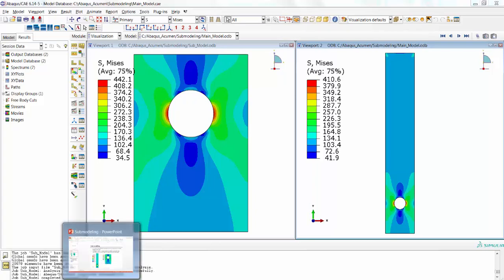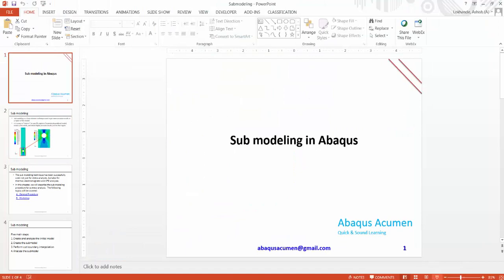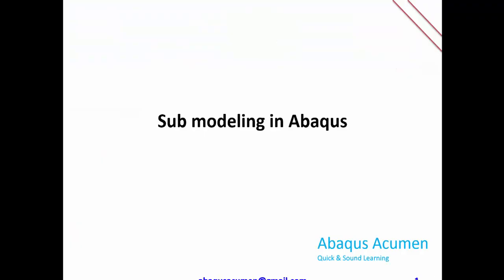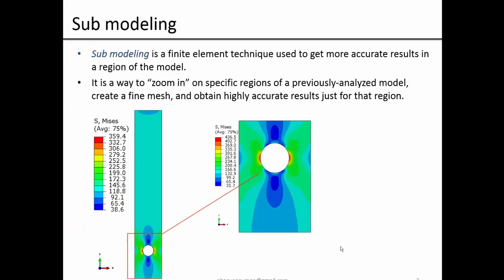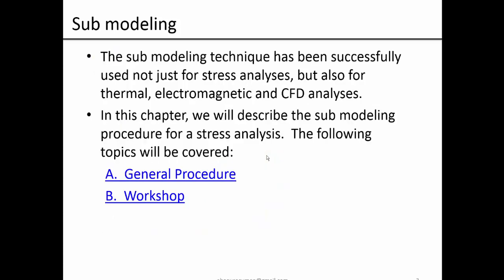We'll now go through a quick PowerPoint presentation. Today's topic is sub modeling in Abaqus. Sub modeling is a finite element technique used to get more accurate results in a region of a model. It is a way to zoom in on a specific region of a previously analyzed model — you analyze a previous model with a coarse mesh, zoom into a specific area, and obtain more accurate results for that region.